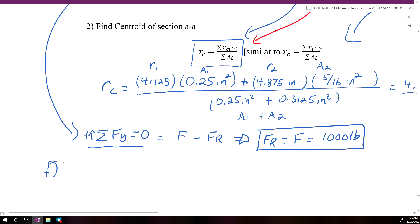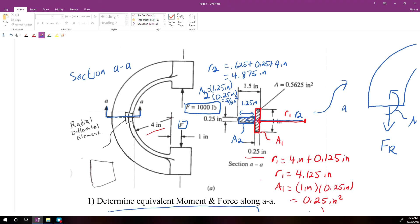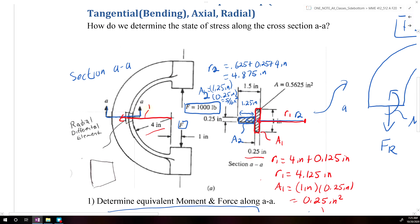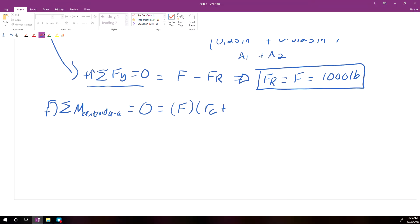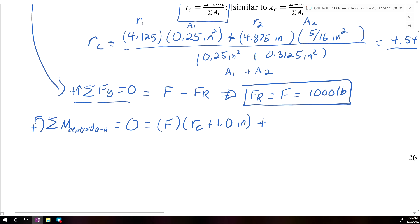Our second equilibrium equation was we had to sum all the moments about the centroid of a-a and set that equal to 0. So we have the moment due to our applied force, so our applied force F times the moment arm. So here we have RC, and then we also have the addition of an additional inch from where the applied force is located, so we're going to add an inch to RC. Now this will create a positive moment, and then we have the moment at a-a.